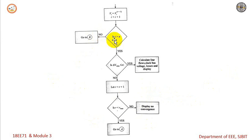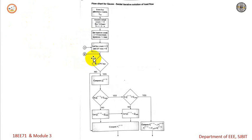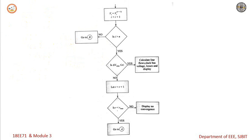If i is not greater than n, we go back and check the buses again, computing the variables — either voltage, angle, or reactive power — depending on the type of bus. This is the flowchart of the Gauss-Seidel iterative technique. In the next session, we will see the flowchart for the Newton-Raphson method in polar coordinates. Thank you.